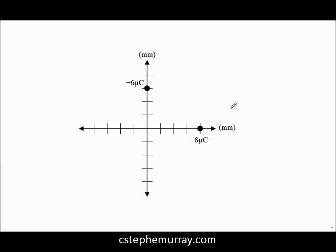First of all, notice our grid that we have here. We have negative six microcoulombs, which is shorthand for negative six times ten to the minus six coulombs, or one millionth of a coulomb. One millimeter equals 0.001 meter or one times ten to the minus third meter.